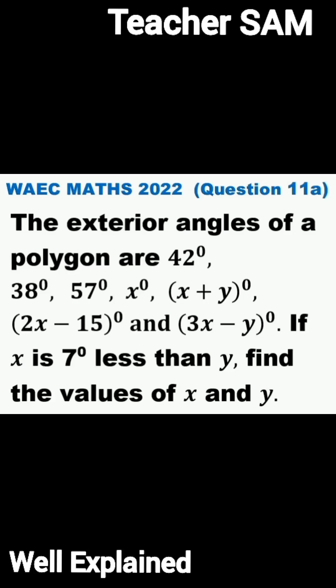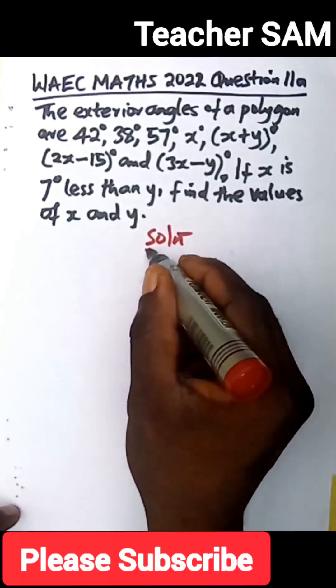Question 11a. The exterior angles of a polygon are 42 degrees, 38 degrees, 57 degrees, x degrees, x plus y degrees, 2x minus 15 degrees, and 3x minus y degrees. If x is 7 degrees less than y, find the values of x and y. Solution.